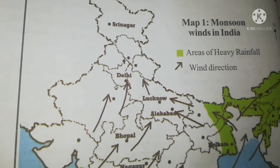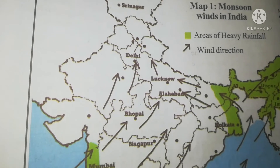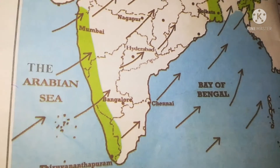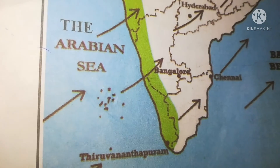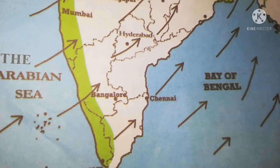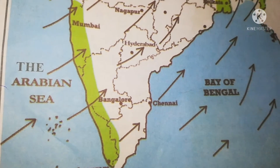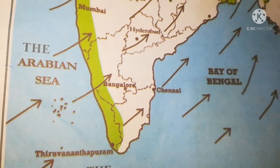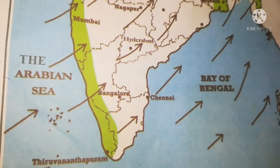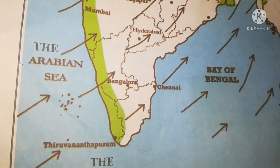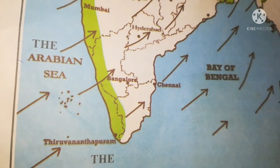Let us discuss about monsoon winds in India. These winds come all the way from the Arabian Sea and Bay of Bengal, and they transport the rain clouds. From the Arabian Sea and from the Bay of Bengal, the winds come. They are called monsoon winds. They are also called southwest monsoon winds as they blow from that direction. The winds are coming from the west and south direction, that's why we are calling them southwest monsoon winds.